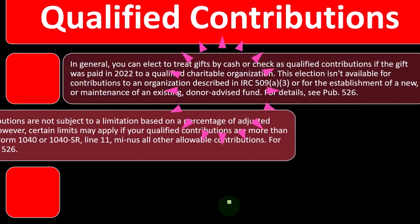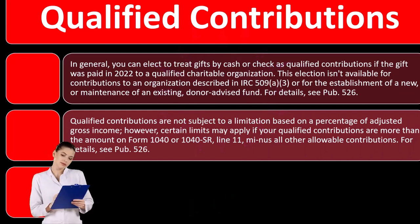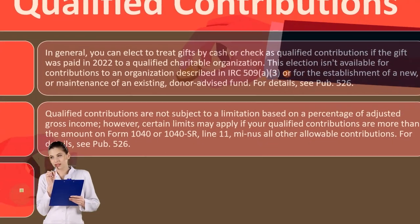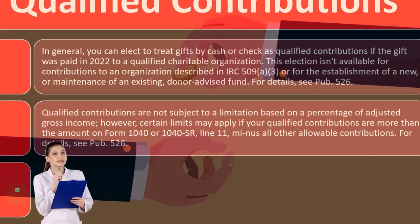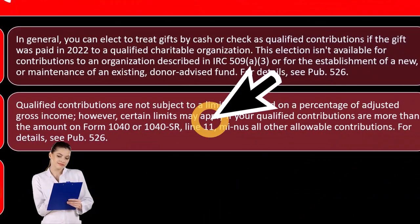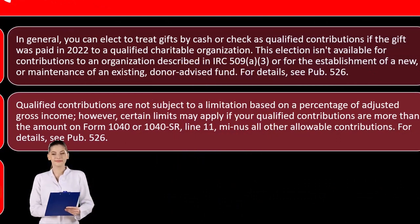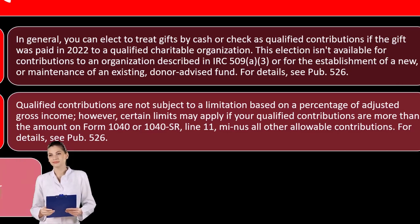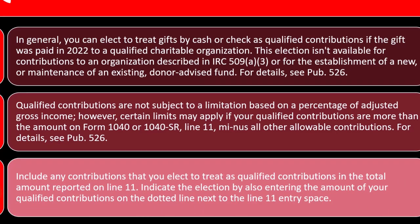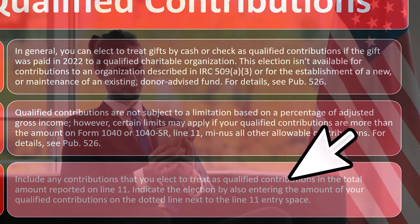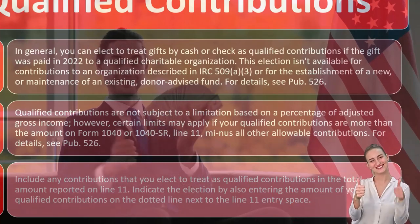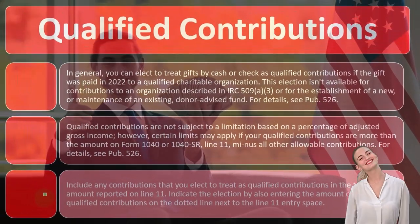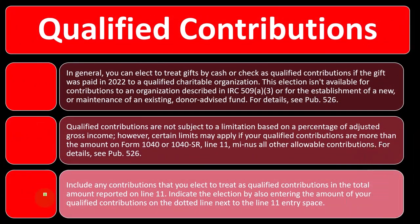For more details, see Publication 526. Qualified contributions are not subject to a limit based on a percentage of adjusted gross income. However, certain limits may apply if your qualified contributions are more than the amount on Form 1040 or 1040-SR, Line 11 — that's the AGI — minus all other allowable contributions. Include any contributions you elect to treat as qualified contributions in the total amount reported on Line 11, and indicate the election by also entering the amount of your qualified contributions on the dotted line next to the Line 11 entry space.